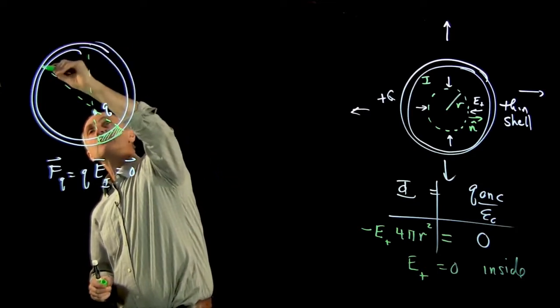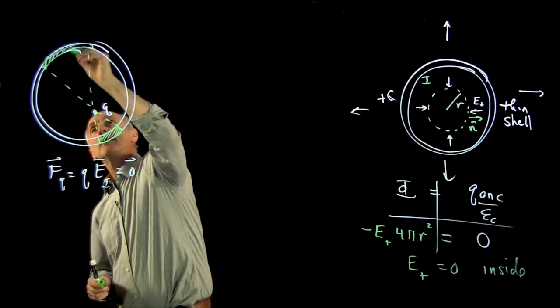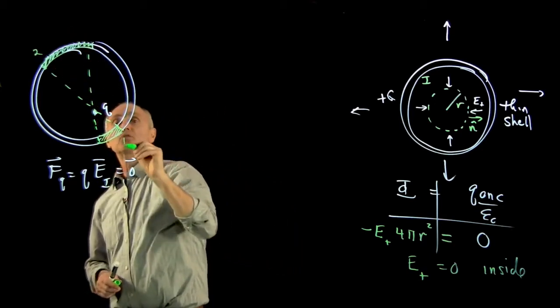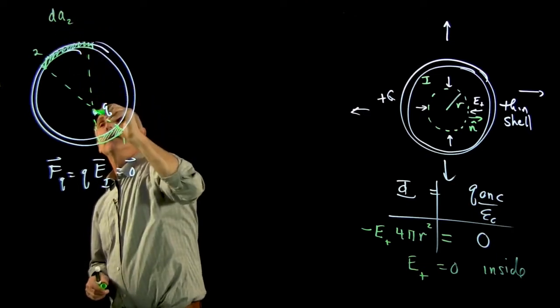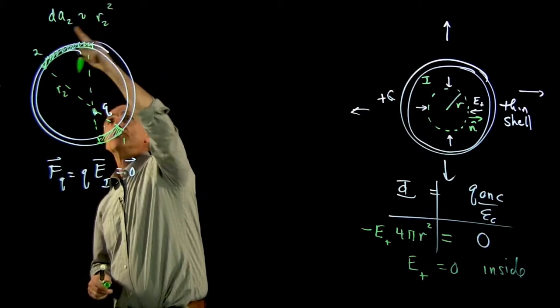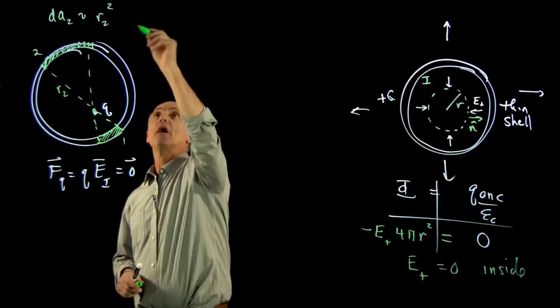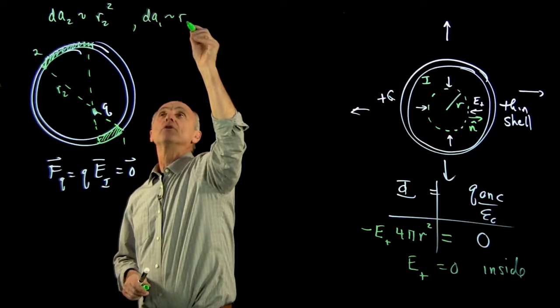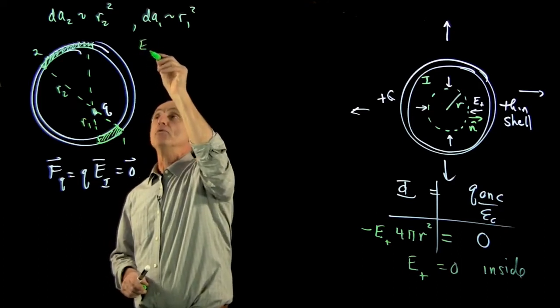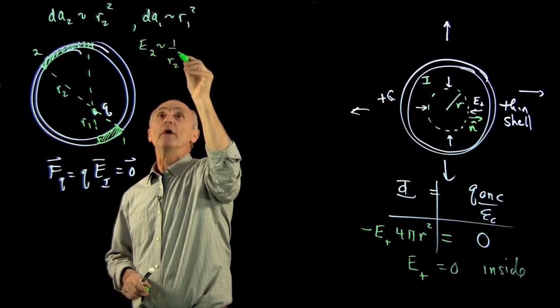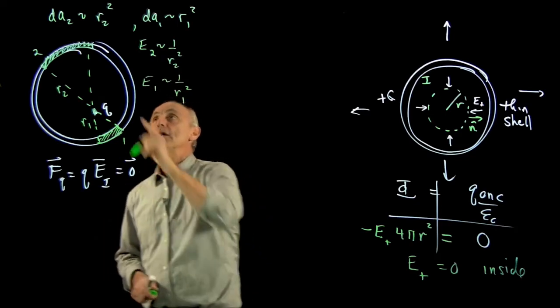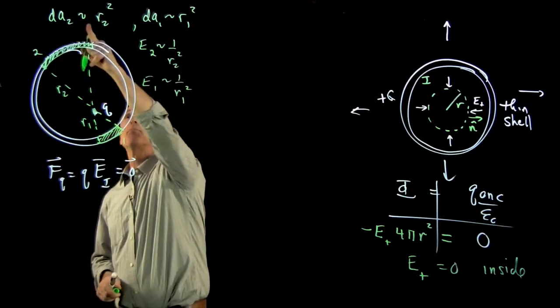Let's extend this out and consider this part of the shell 2. Now, the charge is uniform, and what's interesting is they call this 2 and this 1. The area of 2 is proportional to the distance squared. That's part of the sphere. So the area on 2 is proportional to the distance squared. The area on 1 is proportional to the distance r1 squared.